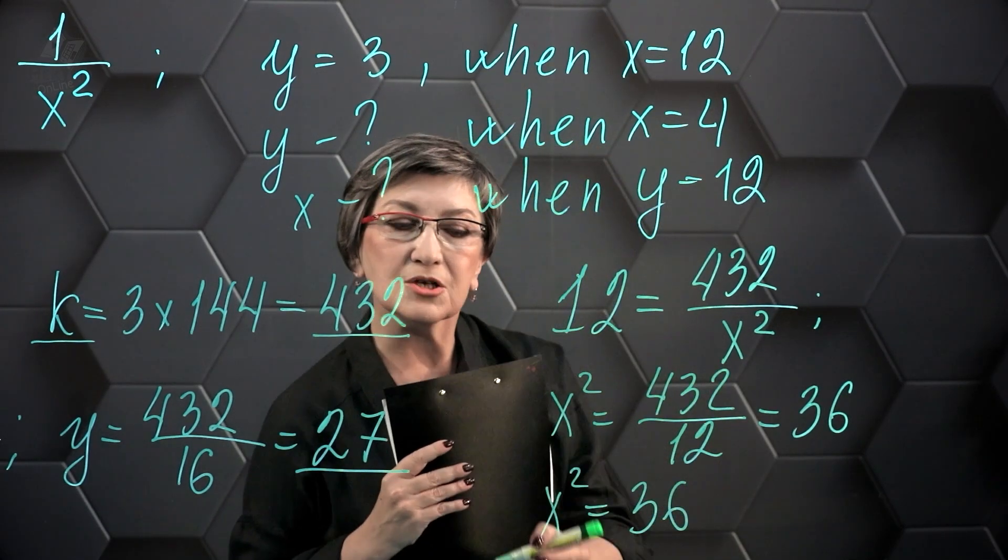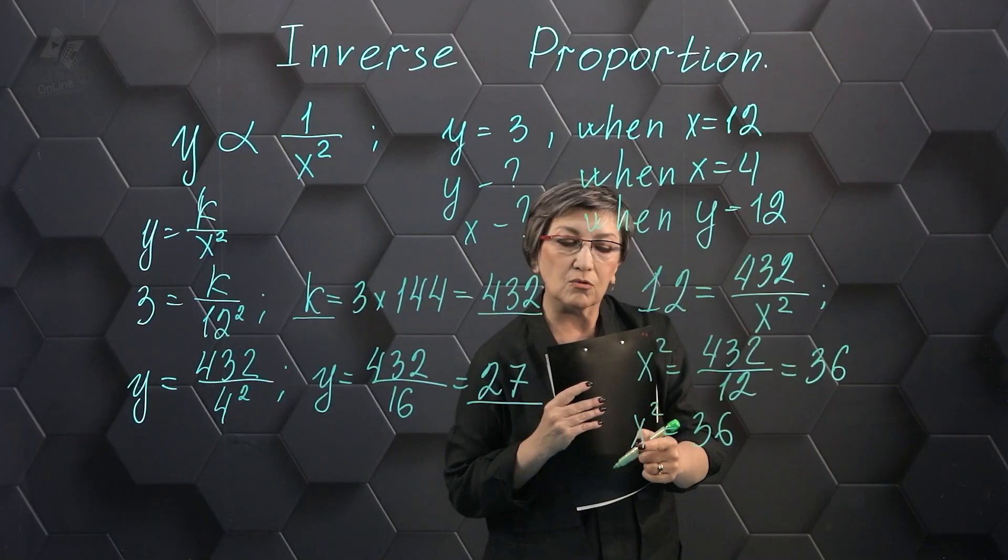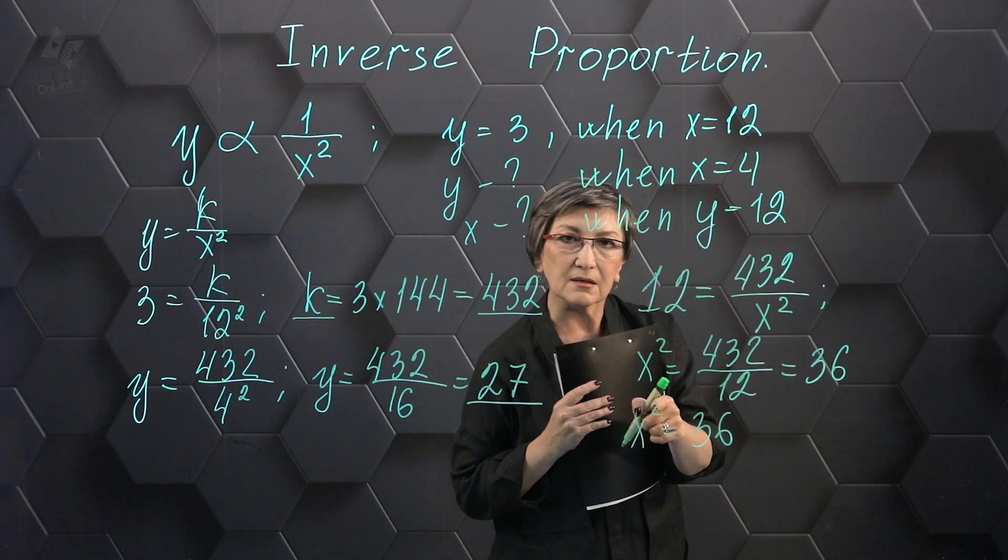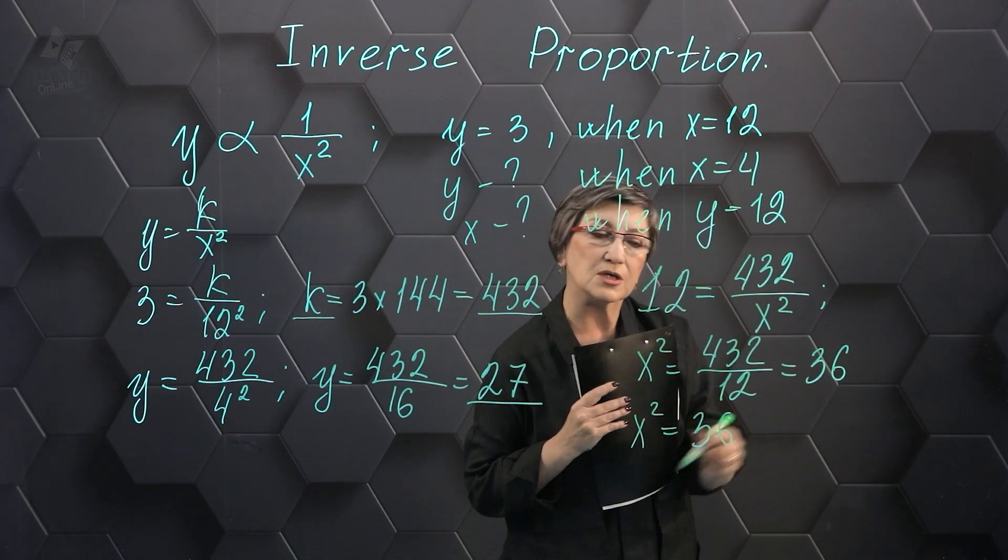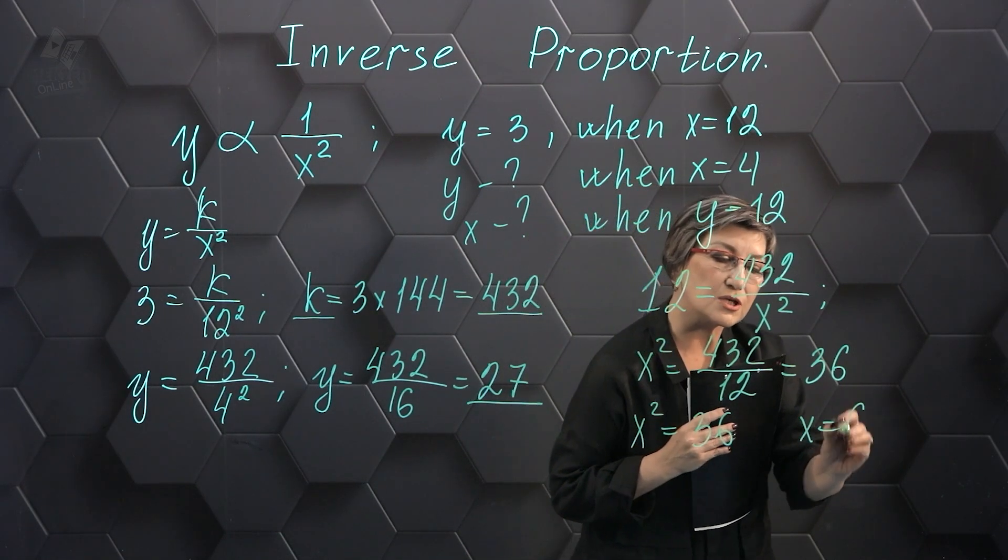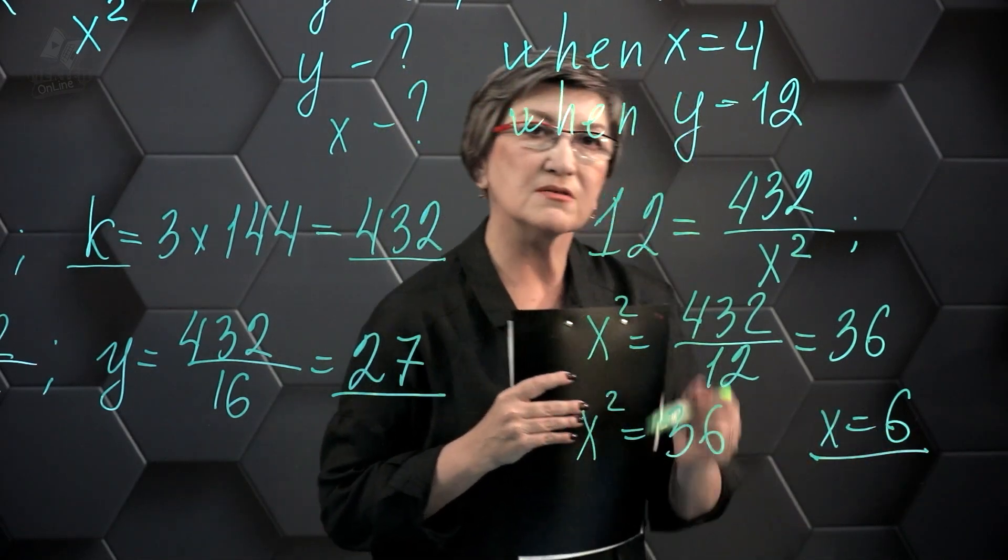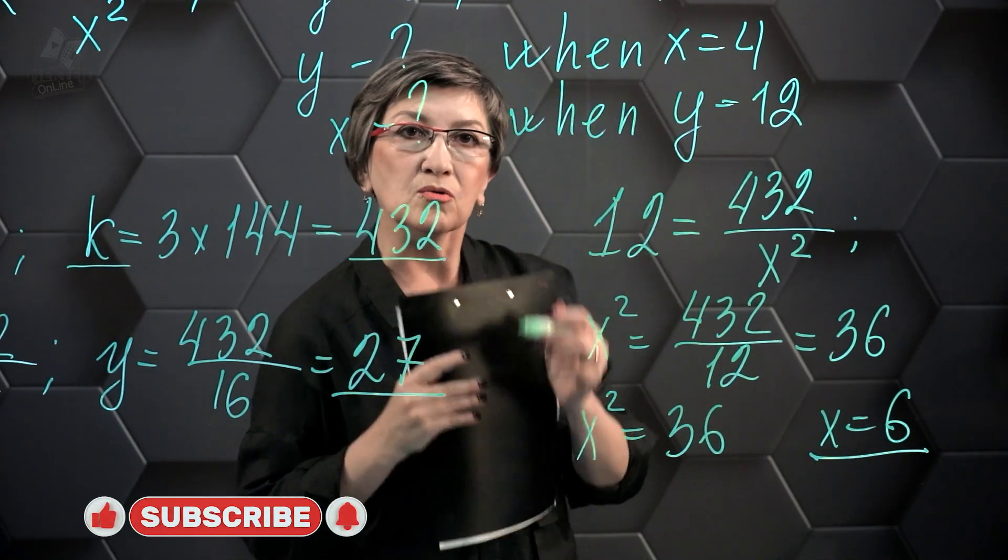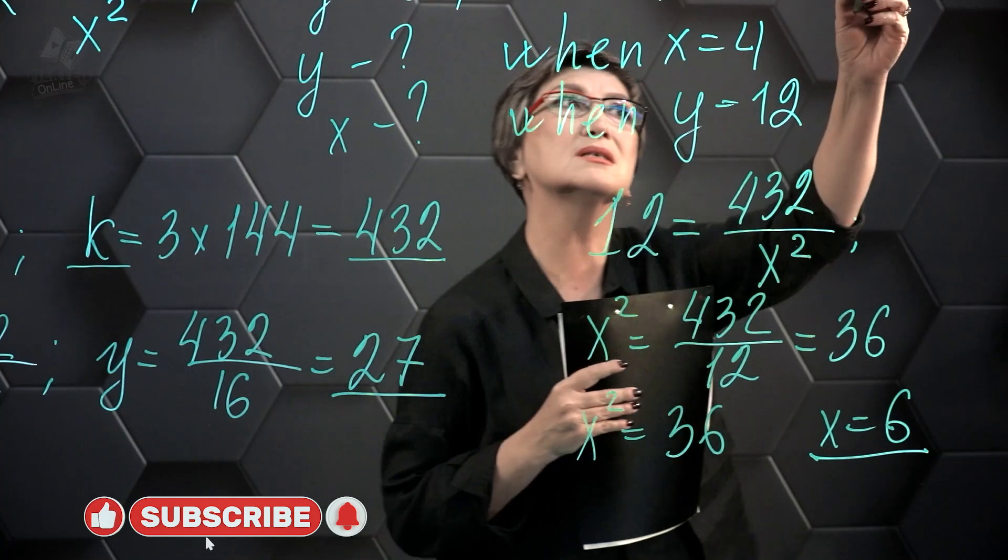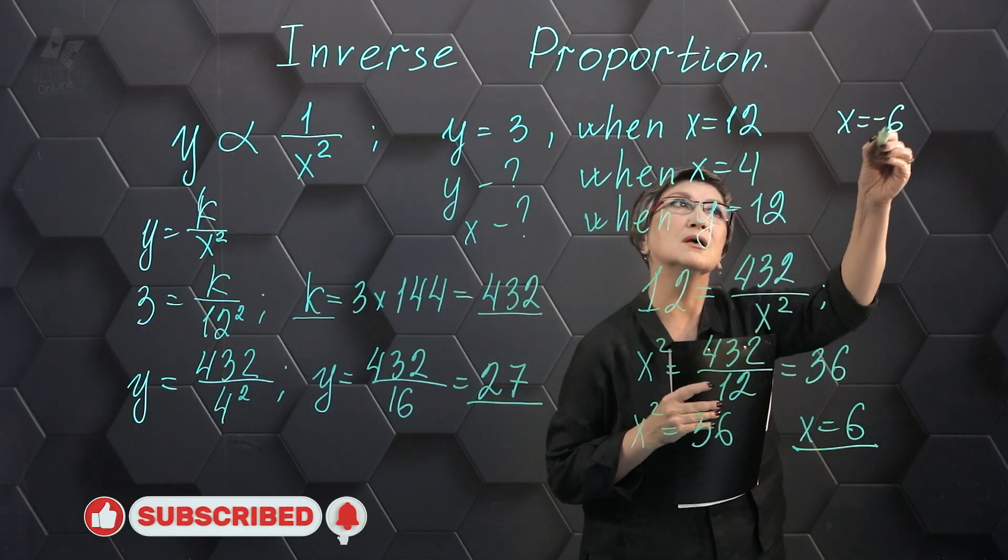But we need to find the value of X. What number squared equals 36? That's 6. In this problem, we write X equals 6 in the answer. But maybe X equals minus 6. But we'll talk about that in the next lessons.